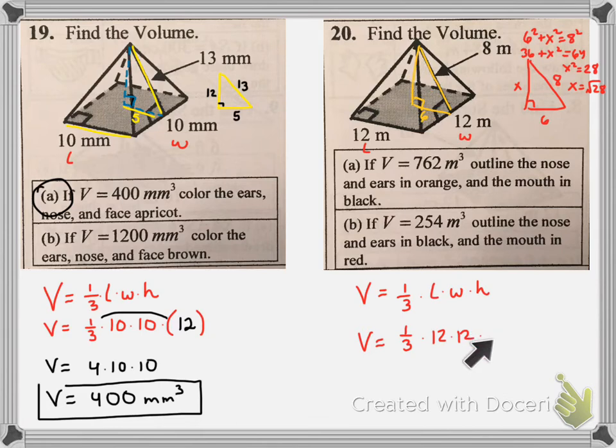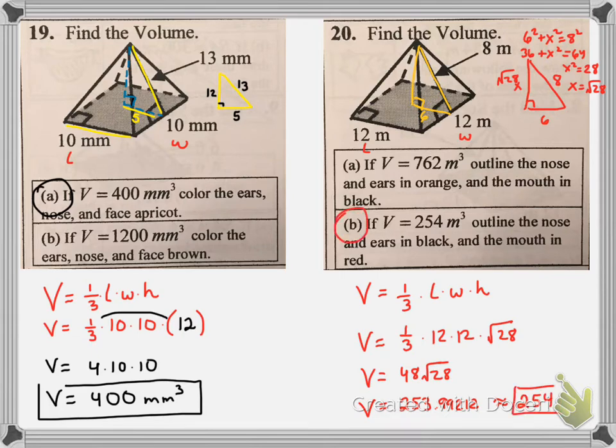And then if I multiply that out, one third of 12 is 4. And then 4 times 12 is 48 right there. So that all gives me 48. I'll just keep the square root of 28. And I'm going to punch this in on my calculator because they don't have a radical answer here. So the square root of 28, when you type that in times 48 ends up being 253.99212. And if you look at your choices, you can say, what's that really close to? Well, if you round up, you're going to get 254. I forgot my units there. So add in your meters cubed. And there you have it.